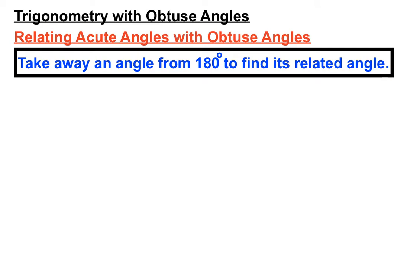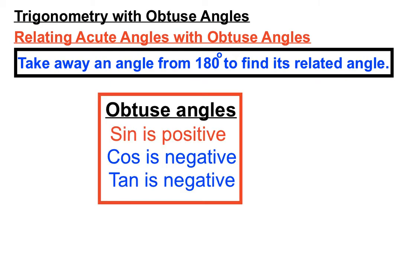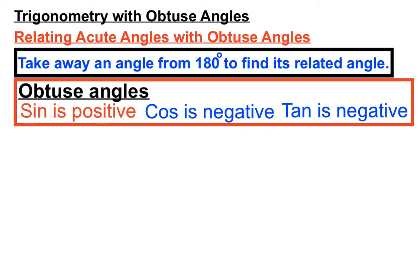So we combine that rule or method, taking away an angle from 180 to find its related angle. And we combine that with the obtuse angle results that I just described, sine being positive but we consider cos and tan to be negative for obtuse angles. We mix those two rules or results together and we get three very interesting results.